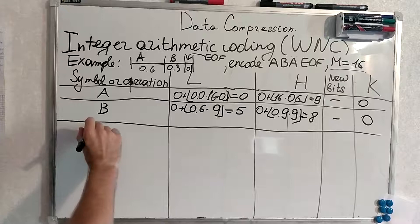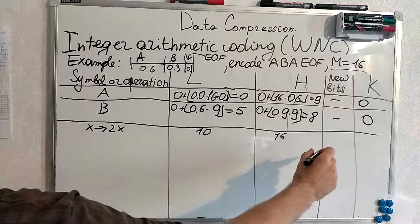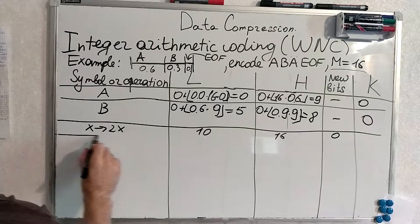Next operation is we just multiply by 2 and produce new bits. 0 because our K is 0. Right? You remember that?